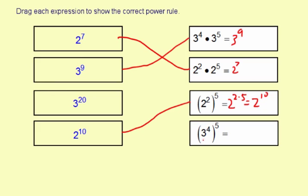And then use the same rule again here. 3 to the 4th, and then the 5th. So that's 3 to the 4 times 5, or 3 to the 20th. So that one goes there.